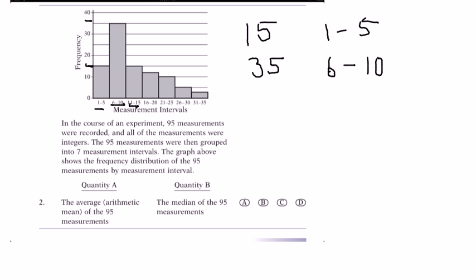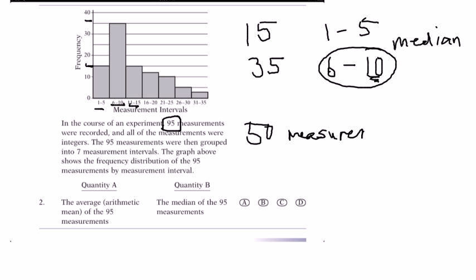Now already we've got over half of the measurements, because 95 measurements were taken. That tells us that the median lies somewhere between 6 and 10. So the worst case scenario would be that the median is 10. The farthest it could go would be 10 because we've got 95 measurements total, 50 measurements are smaller or equal to 10, so only 45 left.